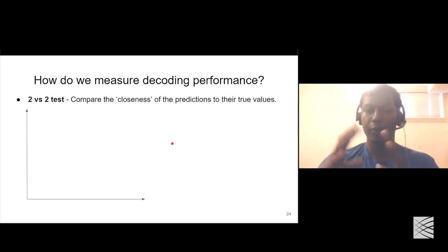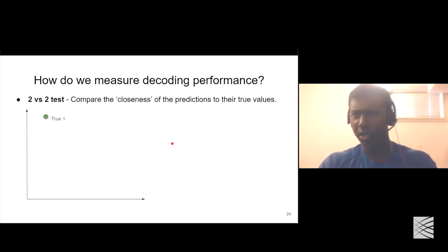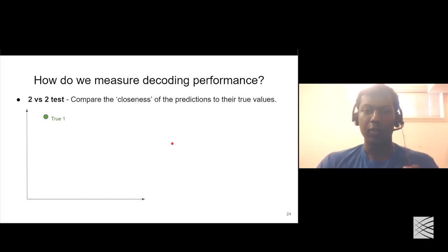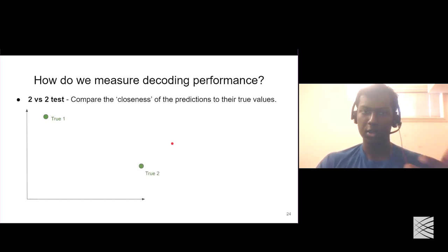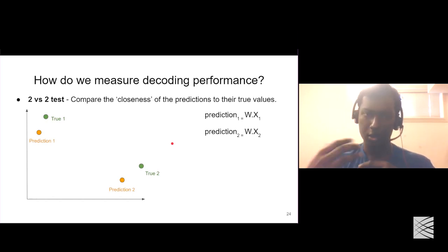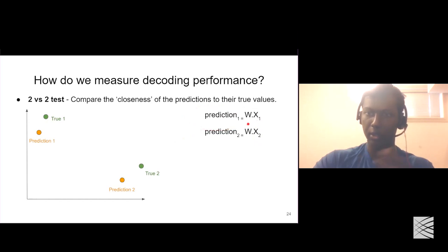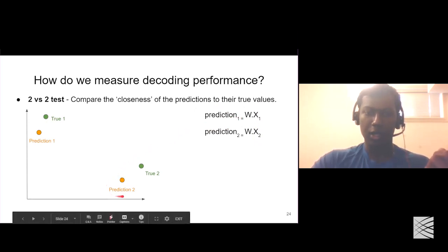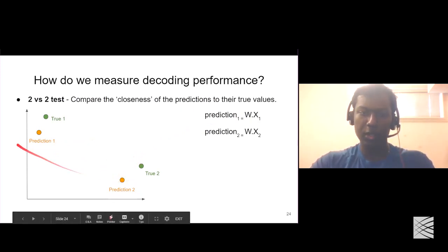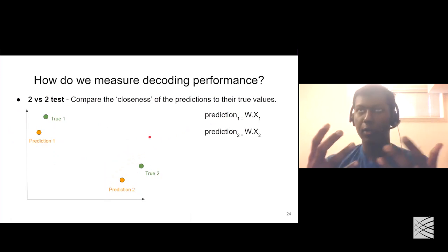From a visual perspective, imagine two axes representing any characteristics of the objects. We have two true values and two predictions, which we compare. X1 and X2 represent brain imaging data, and we get predictions by multiplying the input with the learned transformation. We get representations projected into 2D space. In this case the predictions seem close to the true values, but how do we measure how close they actually are?